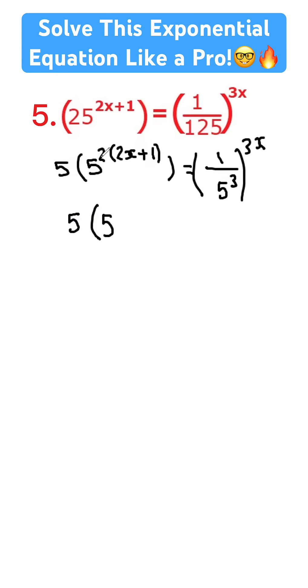We multiply this exponent by the exponent right here, and that will give me 4x plus 2. And here I have to raise the 5 to the top and make the exponent negative 3, and we still have the 3x right there.